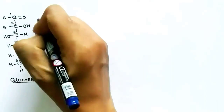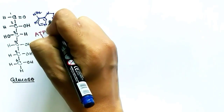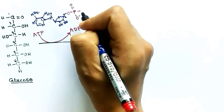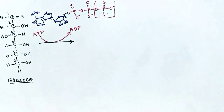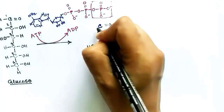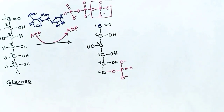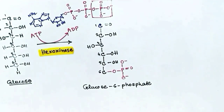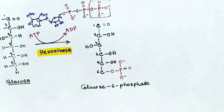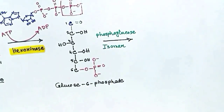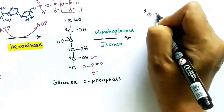In the first step of glycolysis, one ATP molecule is consumed. One phosphate group from ATP is attached to glucose, converting ATP to ADP. The enzyme used is hexokinase. After attaching one phosphate group to glucose, it becomes glucose-6-phosphate. In the next step, isomerization occurs: glucose-6-phosphate isomerizes to fructose-6-phosphate, and the enzyme used is phosphoglucose isomerase.